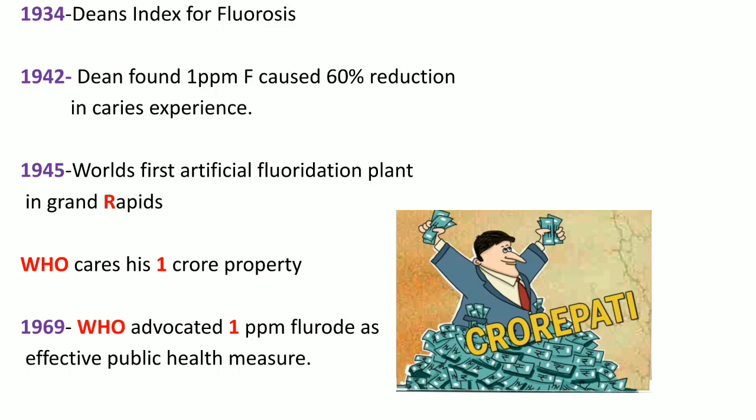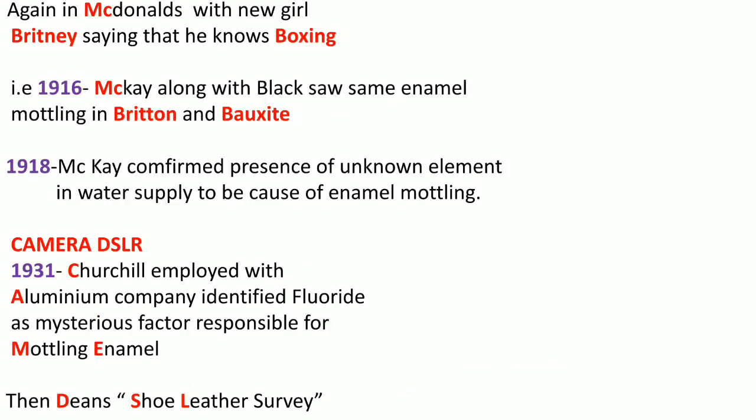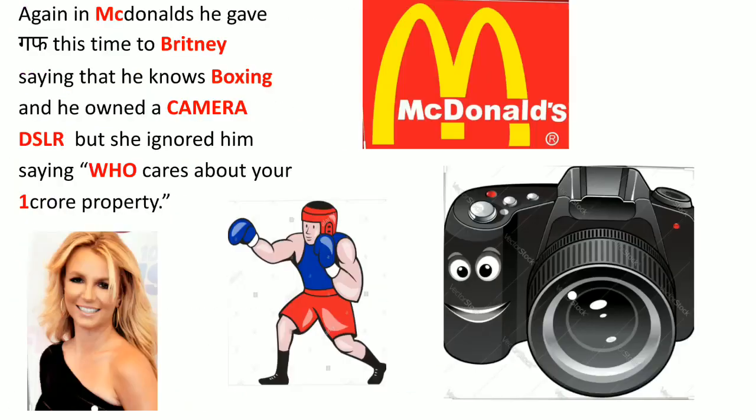In 1945, the world's first artificial fluoridation plant was started in Grand Rapids. Now our last event: he owned his own personal DSLR camera, but since Britney was too rich she ignored him saying, 'Who cares about your one color property?' Here 'who' is transferred to WHO — World Health Organization — and 'one color property' stands for one ppm. So the final event: in 1969, WHO advocated one ppm fluoride as an effective public health care measure.